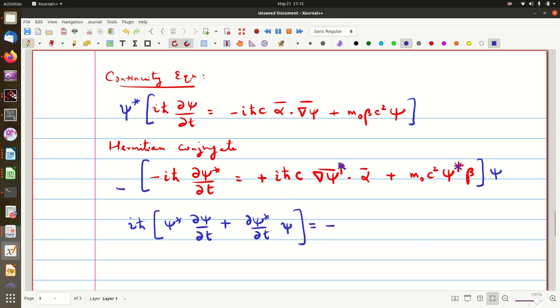And here, we will get minus i ℏ c. There is a minus i ℏ and this also becomes minus because of the negative sign. So when you take that common, you will get α. Be careful, ψ* α⃗·∇ψ plus ∇ψ*·α⃗ ψ.